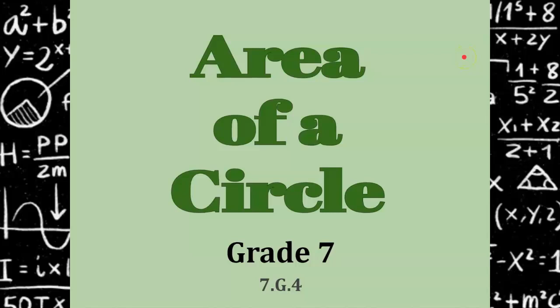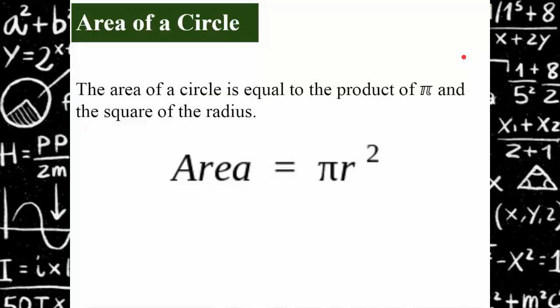Welcome to the lesson on area of a circle. The area of a circle is equal to the product of pi and the square of the radius. When you square something, you multiply it by itself one time. So the area of a circle is equal to — in this order because of PEMDAS, order of operations — you do the exponent first, so radius times radius times pi.